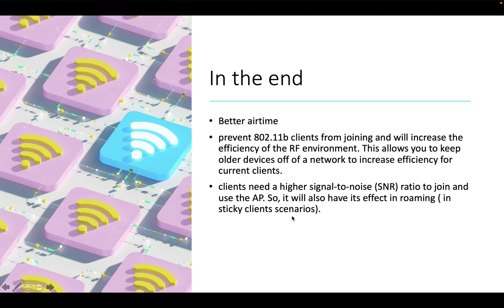The last thing is sticky clients — clients that even though they can sense a better SNR, still stick to the previous AP. Even in those cases, since we require a higher SNR, it will be useful to set the minimum data rate to 12. This concept is pretty easy and understandable, but sometimes people miss it — this is why I wanted to make a short video and explain it. I hope you find it useful and enjoy it. Thanks for watching.